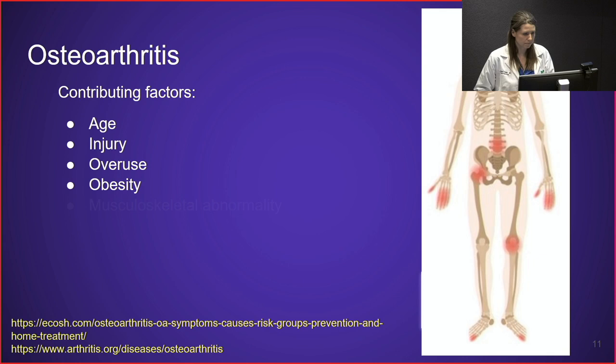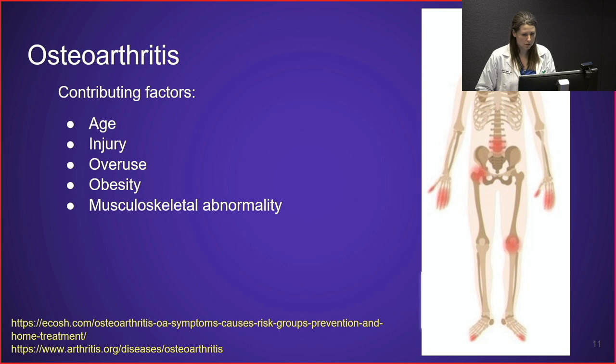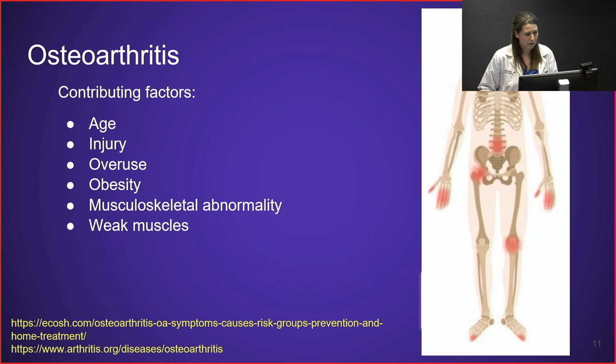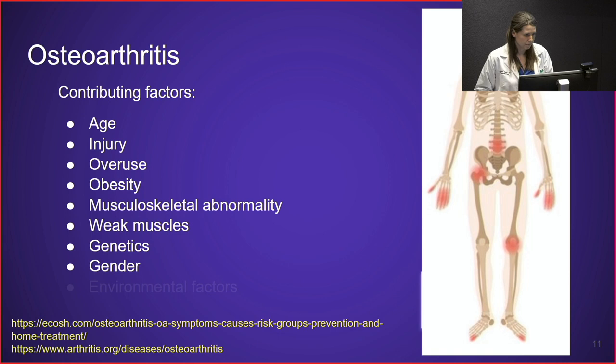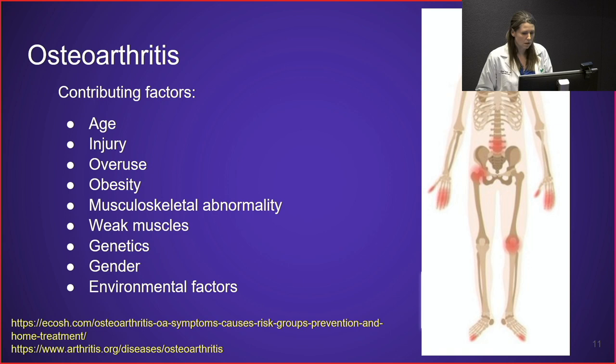Other contributing factors include musculoskeletal abnormalities, where deformities at birth can predispose someone to osteoarthritis. Weakness of muscles leads to poor joint alignment. Genetics plays a role, and family history is not uncommon. Women are more likely to develop osteoarthritis than men. Environmental factors such as occupation, physical activity level, muscle strength, bone density, and diet also contribute.